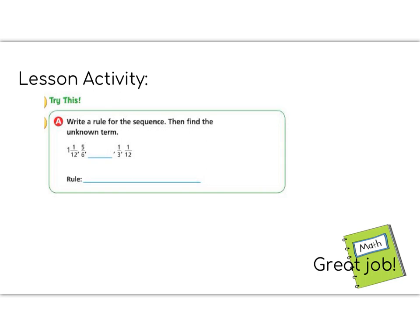Time for the lesson activity. Your job in the lesson activity, which is try this A, and you can go ahead and do it on your paper, is to write a rule for the sequence and then find what goes in that hole. So let's write all of these as a common denominator first, and I'll help you with that. So I have 1 1/12.